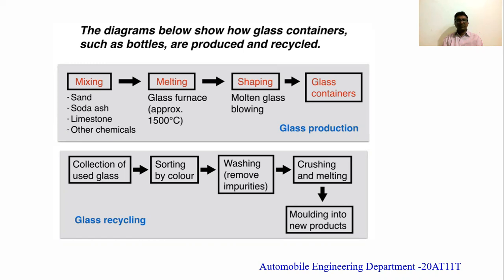Another way to produce glass is by collecting used glasses, which may be of different colors. The colored glasses are sorted and separated, then washed to remove impurities. After removing impurities, the glass is crushed into small pieces and then melted in a furnace. After reaching liquid form, new products are made. This is how glass recycling is done.